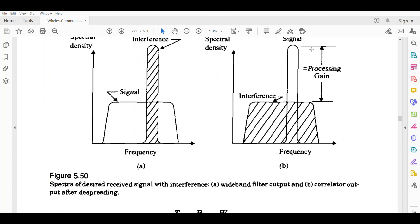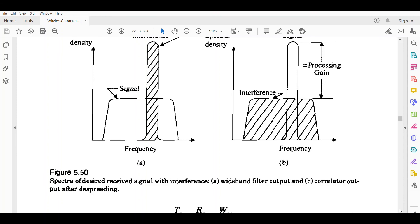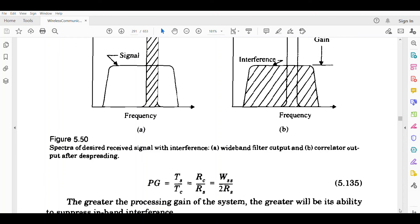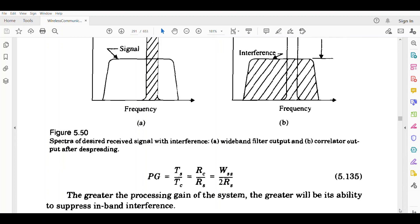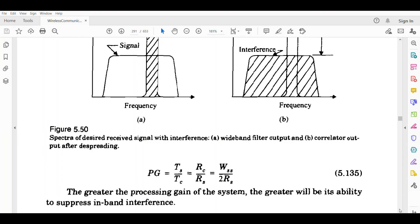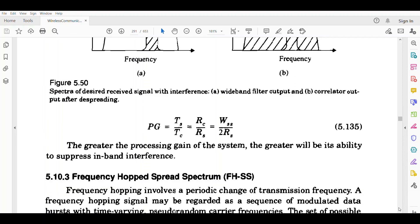The greater the processing gain of the system, the greater will be its ability to suppress in-band interference. The upper signal that you get at the output is free from interference. The equation for processing gain PG = T_s/T_c = B_c/B_s = W_ss/2B_s. Thank you for watching.